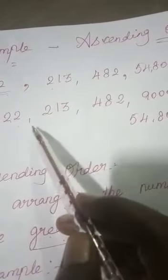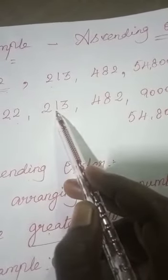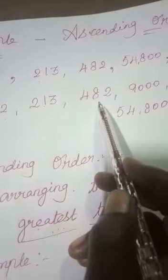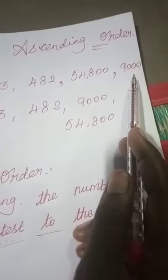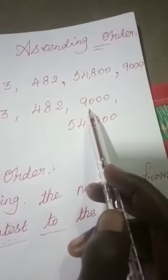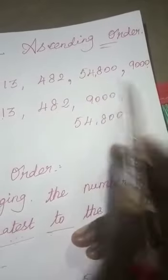As we saw in the comparison of numbers, if both numbers have the same number of digits, we look at the hundreds place. Here we have two hundred and four hundred. We want the smallest, so I write two hundred and thirteen first, then four hundred and eighty-two. After the three-digit numbers, I write the four-digit number nine thousand, and finally the five-digit number fifty-four thousand eight hundred.